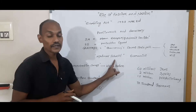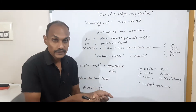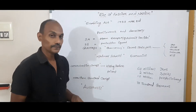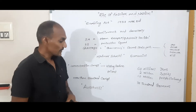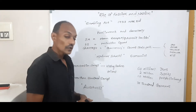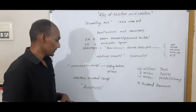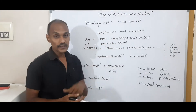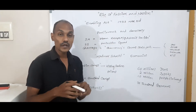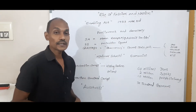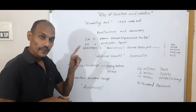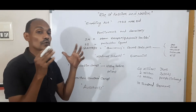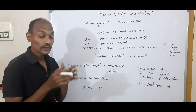Next we move to the concentration camps. When Hitler became Chancellor, the Nazi government operated more than a thousand concentration camps on its own territory and also in occupied places.